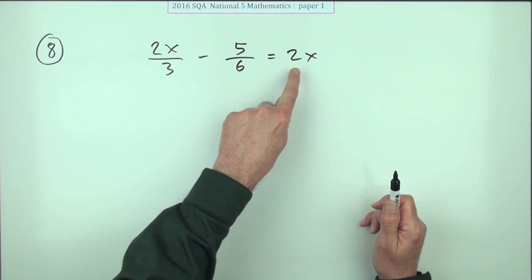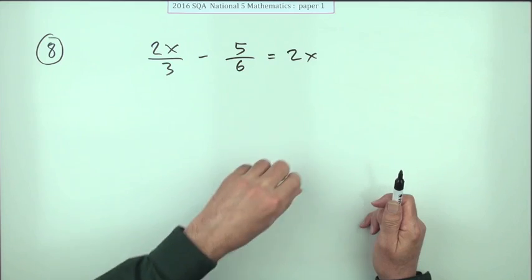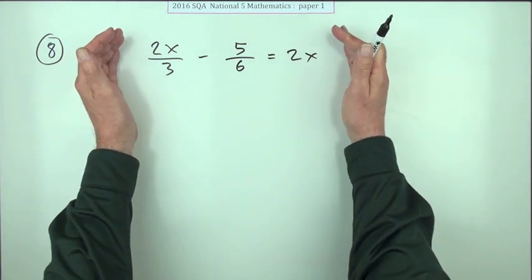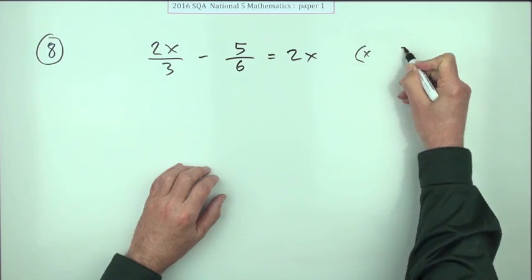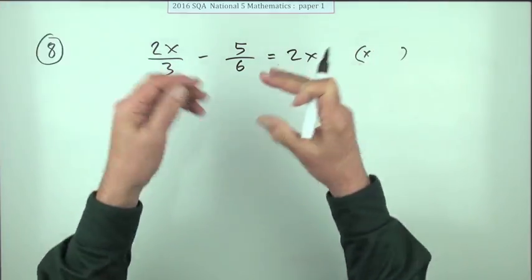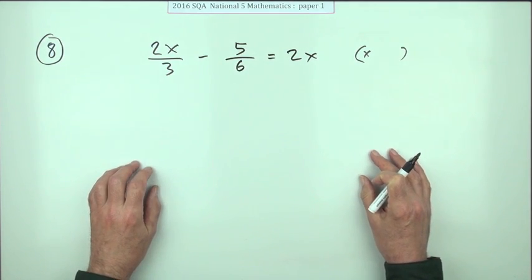You don't want to be swapping sides and adding fractions and dividing by fractions. To get rid of fractions, the plan is you multiply the whole equation up so there's no fractions anymore, so you just need some number that three and six will divide into.